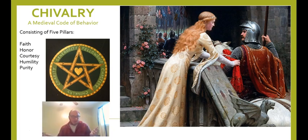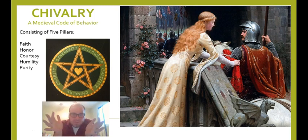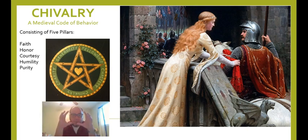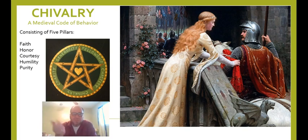The last pillar is purity. You are supposed to stay pure and true to yourself and your ideals — not sleep around, not do, say, or think impure things. That's all part of your code of chivalry as well. What's interesting is that because chivalry deals with just the top of the feudal pyramid, stories about the nobility are almost always stories of chivalry, and those stories are almost always about the internal conflicts within the code.